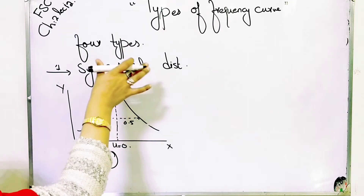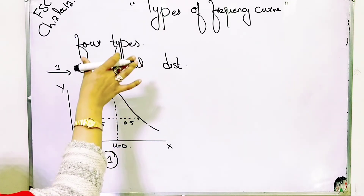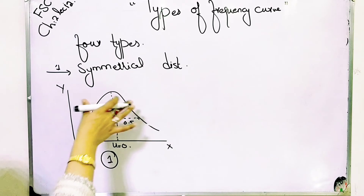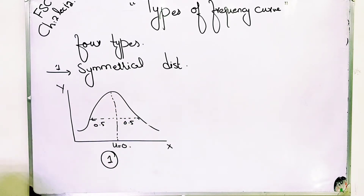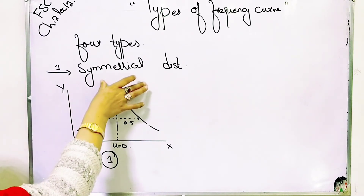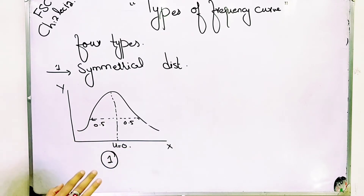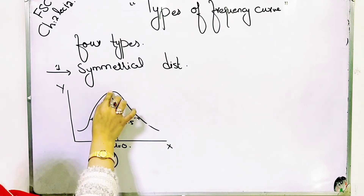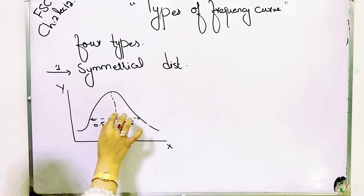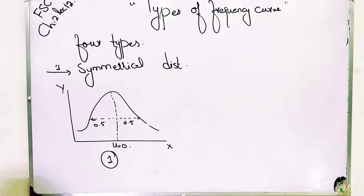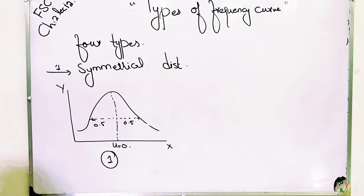If the values equidistant from the central maximum have the same frequencies, we say that the maximum frequency is equal across the total distance. That is the same frequency distribution.